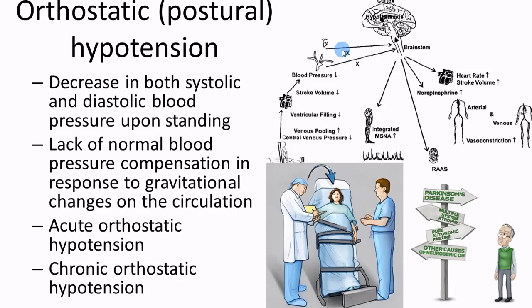Since we're talking about blood pressure, let's also cover hypotension. Orthostatic or postural hypotension: when you stand up normally, blood wants to go to your feet. Your sympathetic nervous system detects that drop in blood pressure, releases adrenaline, and causes vasoconstriction. Constricting blood vessels in the arms, legs, and kidneys pushes blood to your core, heart, and brain rapidly — the nervous system makes this a rapid response. That's the normal pathway.